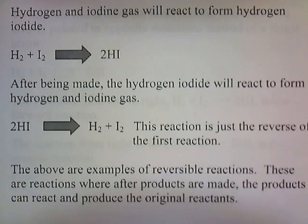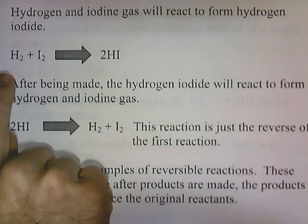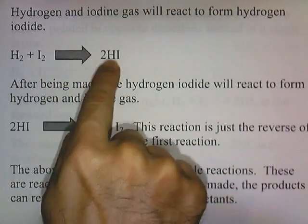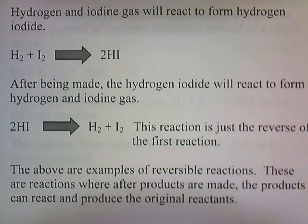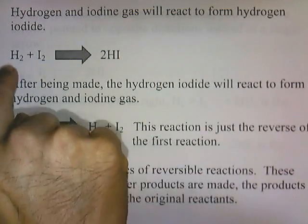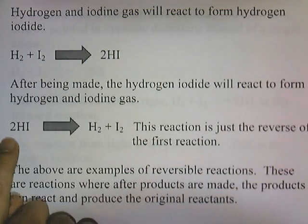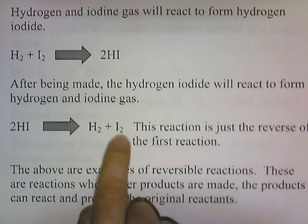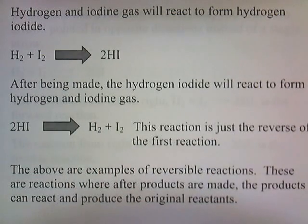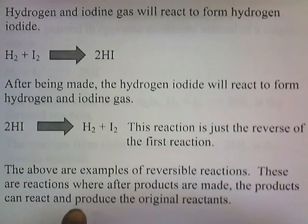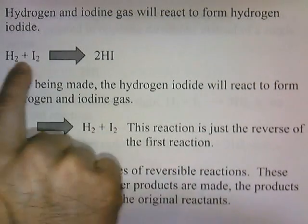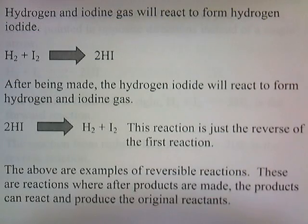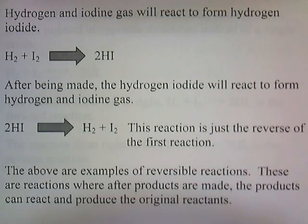Hydrogen gas and iodine gas will react to form hydrogen iodide. After being made, the hydrogen iodide will react to form hydrogen and iodine gas again — two hydrogen iodides react to form hydrogen and iodine gas. This second reaction is just the reverse of the first. These are examples of reversible reactions, where after the products are made, the products can react and produce the original reactants.